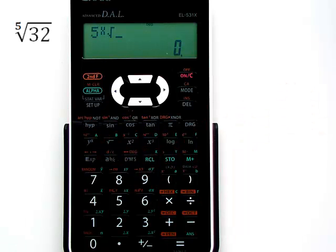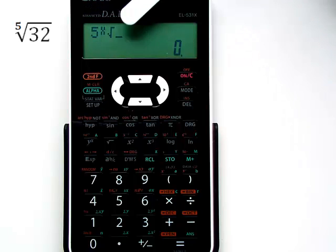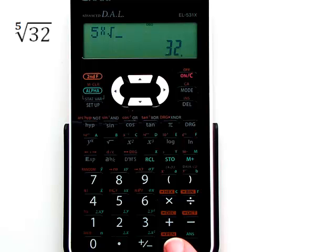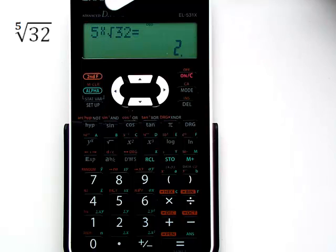Now on the display, you see 5, then the symbol for the nth root key. Now we'll enter 32, followed by the equal sign. The fifth root of 32 equals 2.